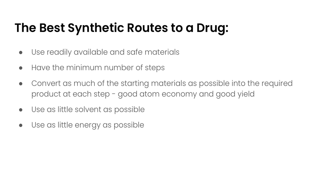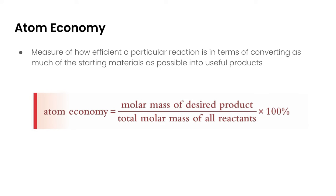The best synthetic routes to a drug are going to use readily available and safe materials, have a minimum number of steps, and convert as much of the starting materials as possible into the required product at each step — so good atom economy and yield. They will also use as little solvent and as little energy as possible. I've mentioned atom economy a couple of times, so let's formally define it: it is the measure of how efficient a particular reaction is in terms of converting as much of the starting materials as possible into useful products.